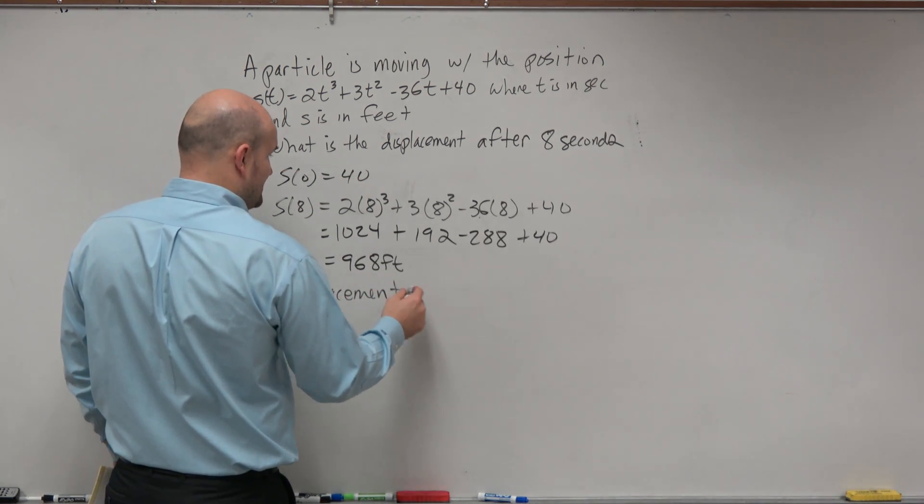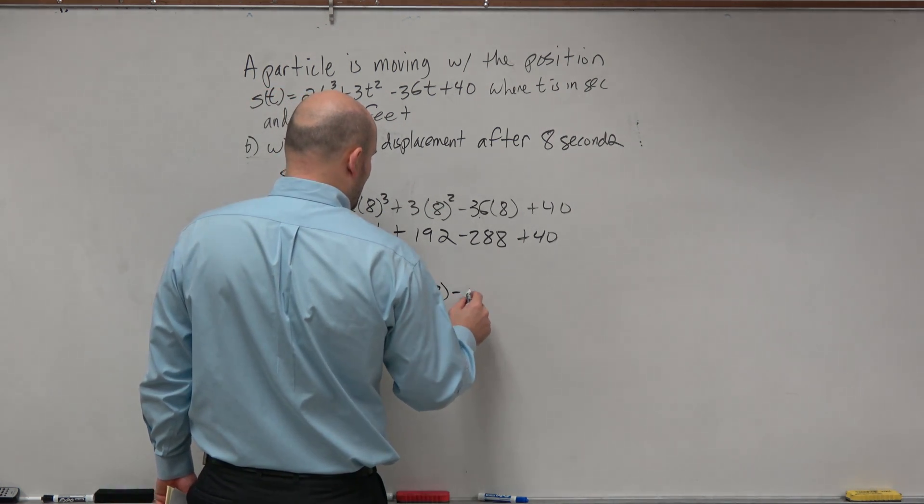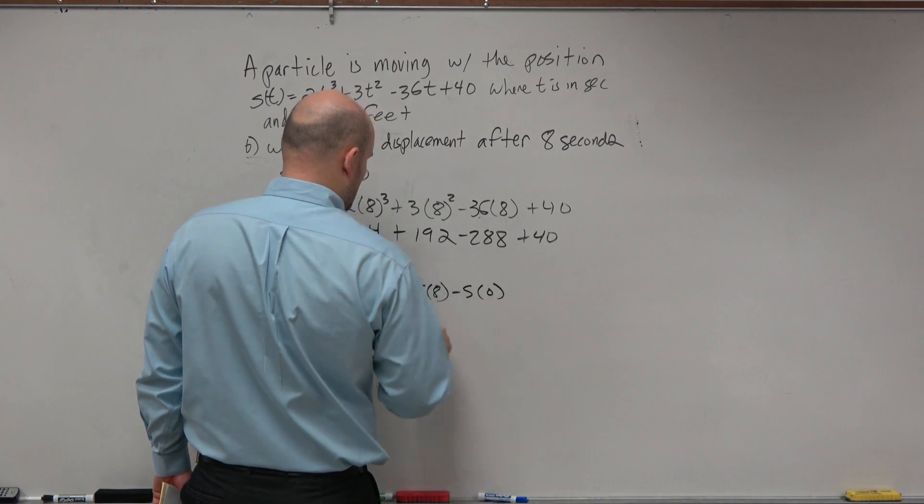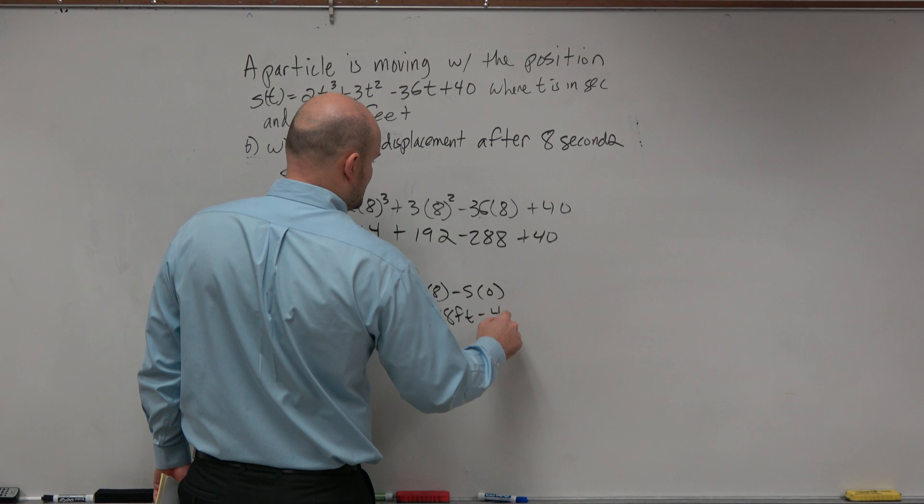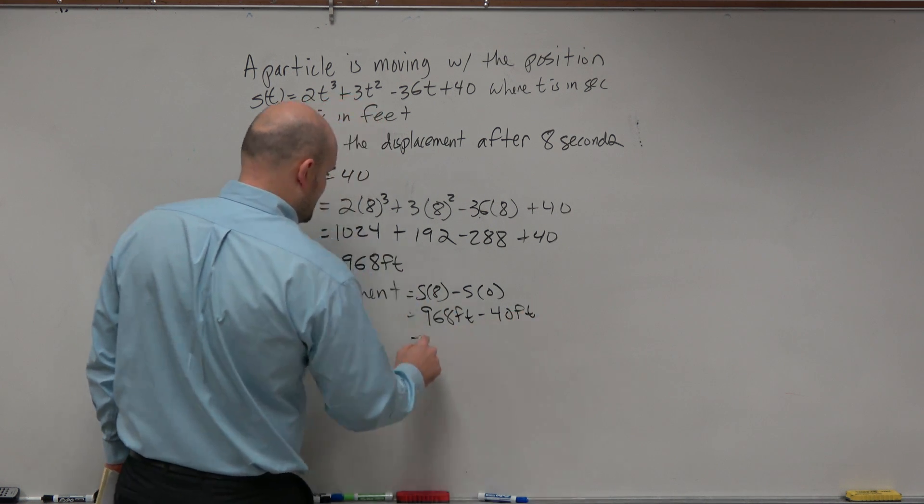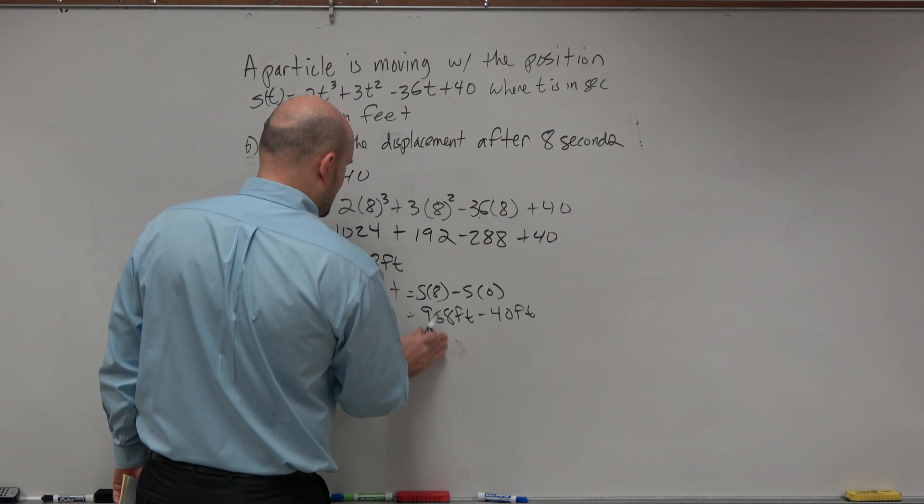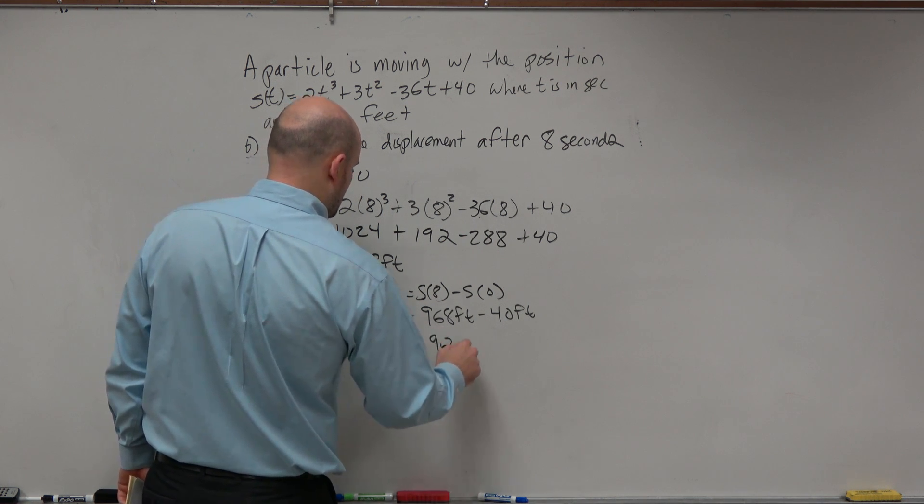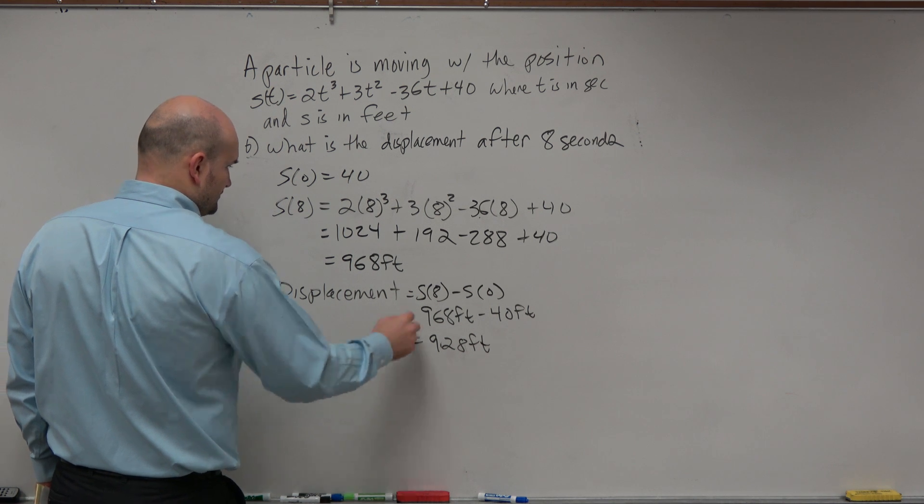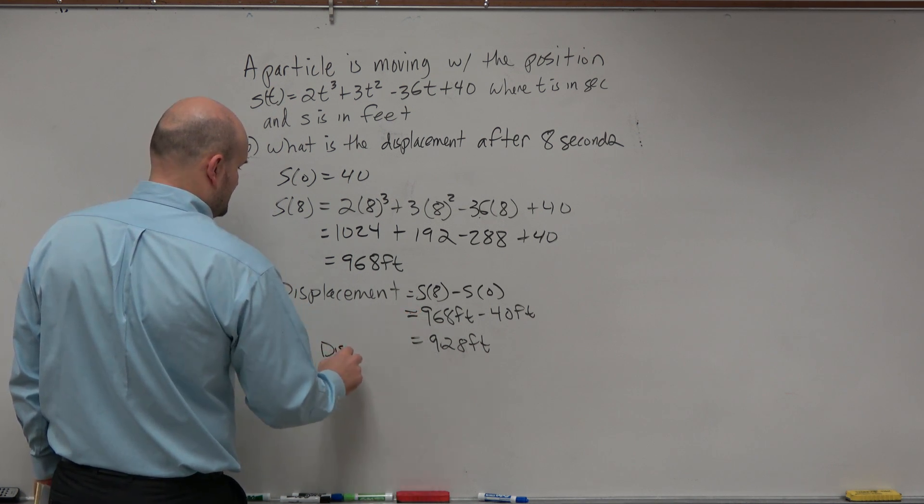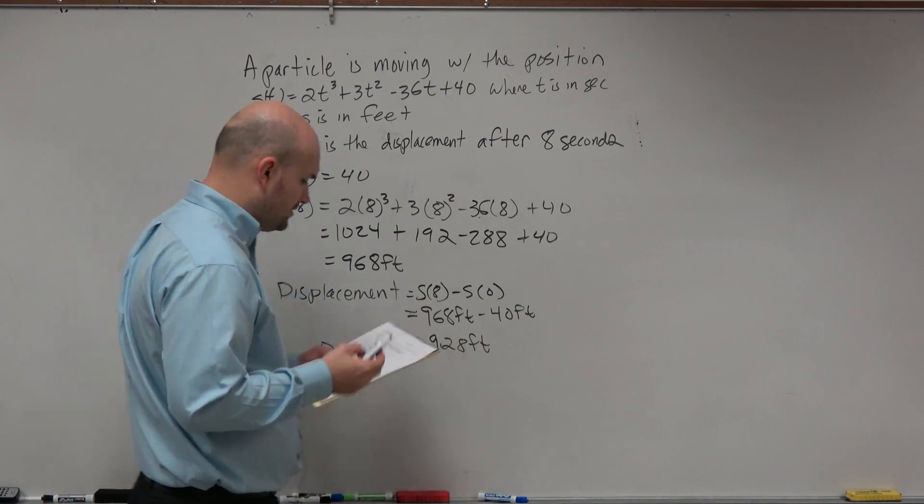The displacement is basically going to be s of 8 minus s of 0. So that's 968 feet minus 40 feet, which is 928 feet. And you could just write the displacement, 928 feet.